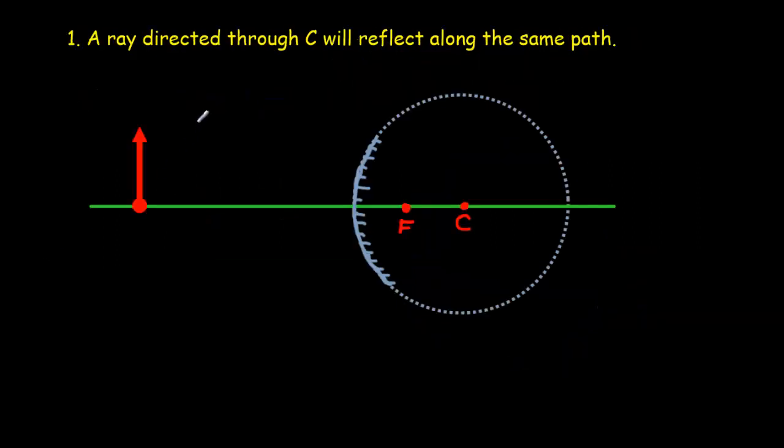Our first rule: if we send in a ray that's aiming directly through C, let's draw an orange line directly through C. Remember, the rays always come from the tip of the arrow. It's like the head of the candle where the light is coming from. If we direct a ray along this way, it would head straight back.